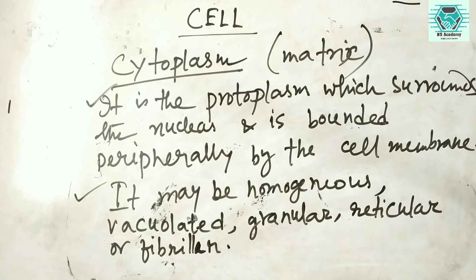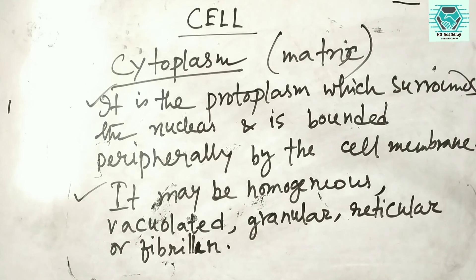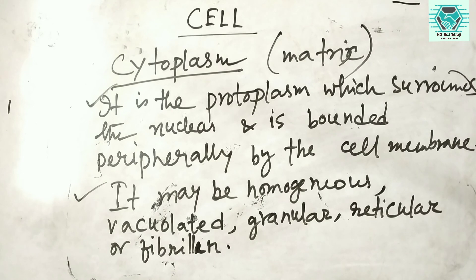In the cytoplasm there are cytoplasmic organelles, which are mostly membranous. The cytoplasm also contains cytoplasmic RNA, ribosomes, centrosomes, fibrils, filaments, and tubules, as well as inclusions. So we categorize the cytoplasm into two parts: cytoplasmic organelles (the living part) and cytoplasmic inclusions (the non-living part). These form the inner structure of the cell, surrounded by the cell membrane.